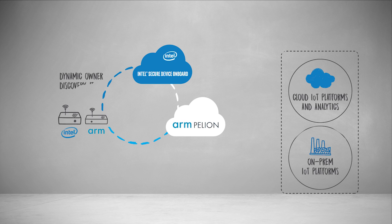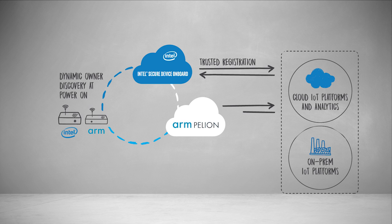Inside the device's trusted execution environments are software clients that communicate with the Intel Secure Device Onboard, or Intel SDO, service. The SDO service has a role to discover and match the device to its owner's IoT platform that may reside in any cloud. ARM Pelion is a device and data management platform with connectivity services to connect any device, any data, any network to any cloud.